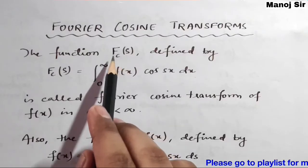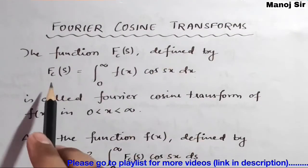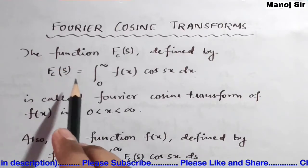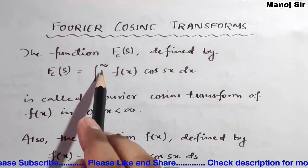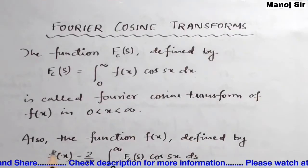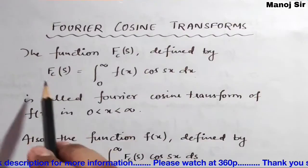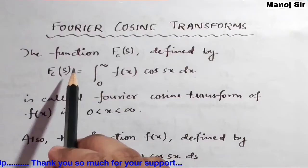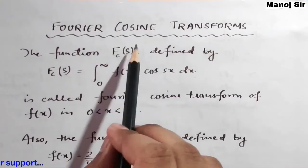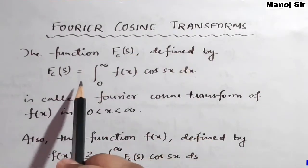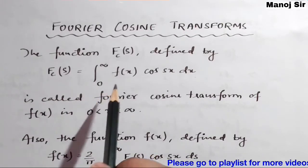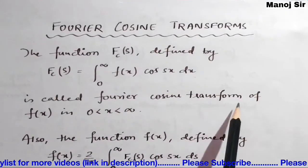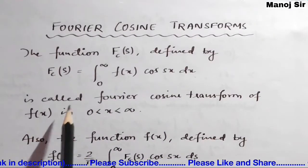The Fourier cosine transform fc of s is defined by: fc(s) = integration from 0 to infinity of f(x) cos(sx) dx. This is called the Fourier cosine transform for the function f of x, with the limit from 0 to infinity.